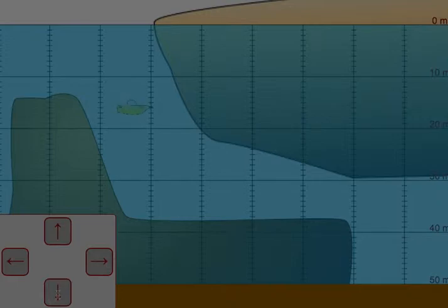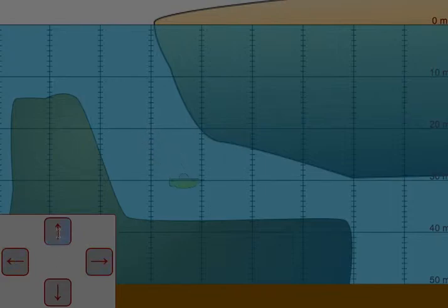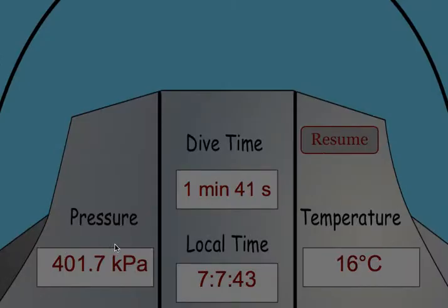They'll have to re-navigate to the location where they'd like to go. When they want to take data, they need to stop the sub both vertically and horizontally, hit the data button, and get their new pressure reading.